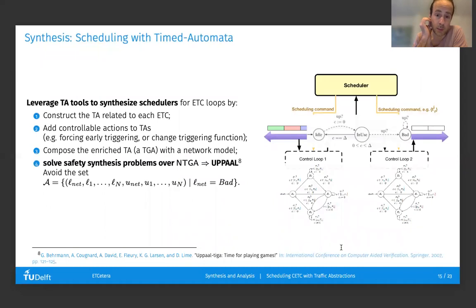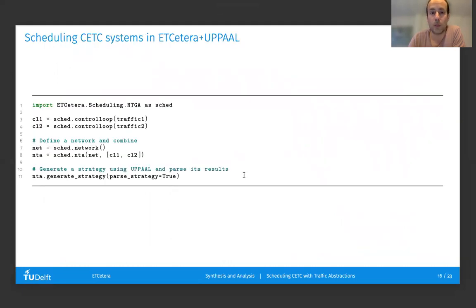Once we have these abstractions available, one can enrich these abstractions with actions useful for scheduling, for instance, forcing early triggering, compose these abstractions of multiple control loops with a model of a network where a bad state is reached when two control loops try to access the channel within a certain time interval. Then we can use UPPAAL to solve a safety problem which will lead to a scheduling strategy preventing collisions in this overall system. This is done with very few lines of code in ETCetera, where the last one actually calls UPPAAL and retrieves the resulting strategy.